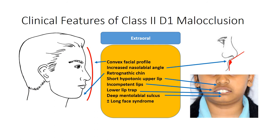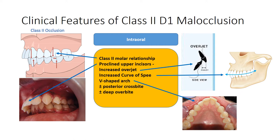The clinical features of class 2 division 1 malocclusion: extra-orally, the patient has a convex facial profile, an increased nasolabial angle, a retrognathic chin, a short and hypotonic upper lip, incompetent lips, lower lip trap, a deep labiomental sulcus, and increased vertical facial proportions. Intra-orally, there is a class 2 molar relationship, proclined upper incisors leading to an increased overjet, an increased curve of Spee, a V-shaped arch, a possible posterior crossbite, and a deep overbite.